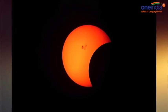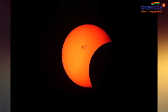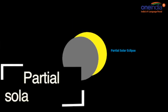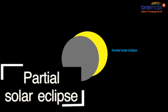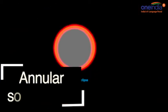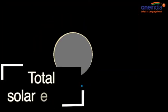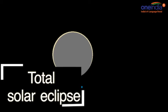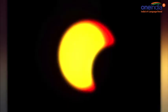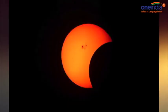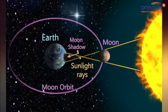There are three main types of solar eclipse: a partial solar eclipse, an annular solar eclipse, and a total solar eclipse. A partial solar eclipse occurs when the moon does not line up completely with the sun, and so only partially blocks the sunlight from reaching the earth.